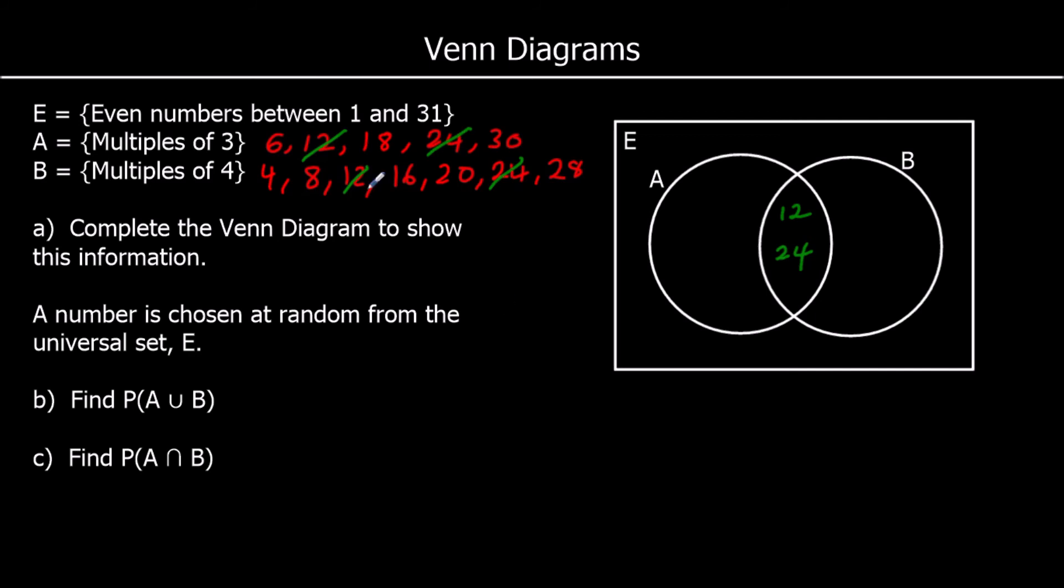So what else has A got? We've got 6, 18 and 30. And what else does B have? We've got 4, 8, 16, 20 and 28. Are we missing any numbers? So we wanted all even numbers between 1 and 31. We don't have 2, so that's going to go on the outside. We've got 4, 6, 8. We don't have 10. We've got 12. We don't have a 14. We've got 16, 18, 20. We don't have a 22. We've got 24. We don't have a 26. And we've got 28 and 30.